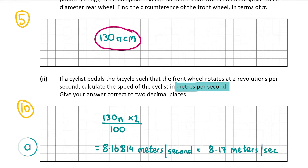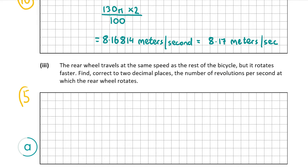That's the answer for part two. Now let's look at part three, worth five marks. The rear wheel travels at the same speed as the rest of the bike but rotates faster. We need to find, correct to two decimal places, the number of revolutions per second at which the rear wheel rotates. First, we work out the circumference using pi times the diameter, so in this case it's 46π centimeters.